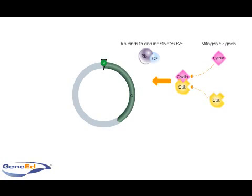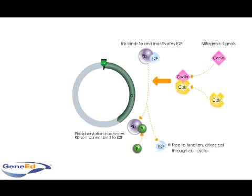Active cyclin D CDK complexes phosphorylate and inactivate PRB, which leads to the release of E2F. E2F is then free to function and to drive cells through the cell cycle.